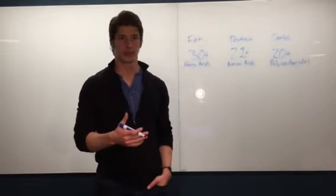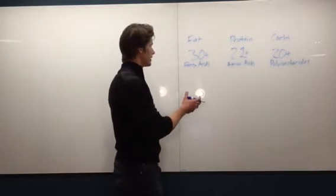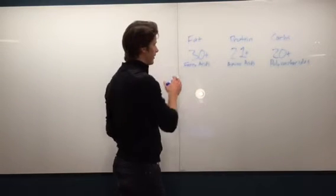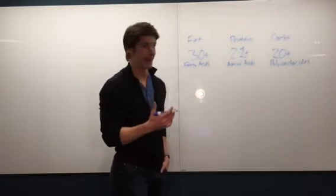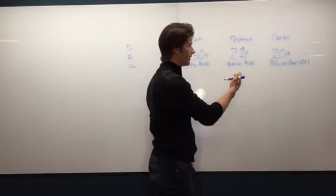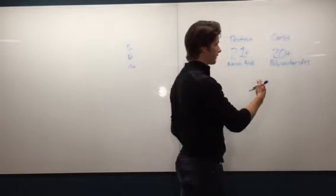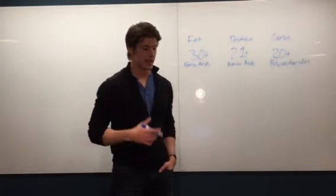So I guess the long-term synopsis of this is that when people say fat, they really need to be concerned with all 30-plus fatty acids. When people say protein, they need to be concerned with all 21 amino acids. When people say carbs, they need to be concerned with the 20-plus polysaccharides that could be created from these.